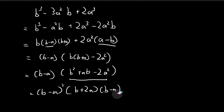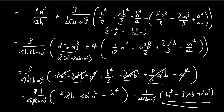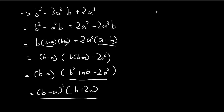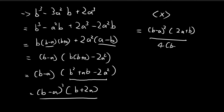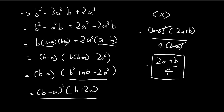So b cubed minus 3a squared b plus 2a cubed factorizes as (b minus a) squared times (b plus 2a). Going back to the expected value expression, we substitute this factorized form. The (b minus a) squared factors cancel, leaving (2a plus b) divided by 4. This is the expected value of x.